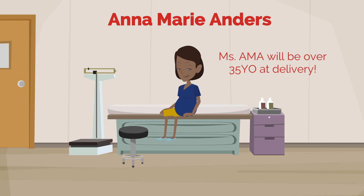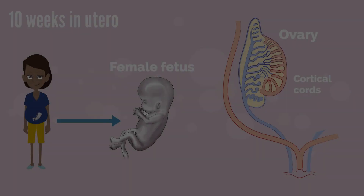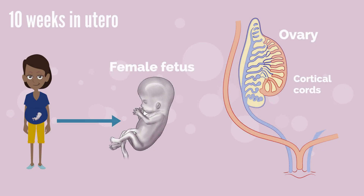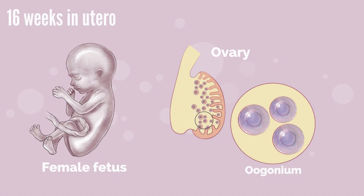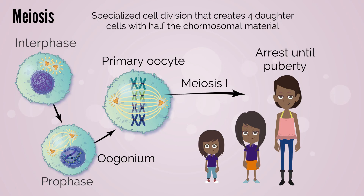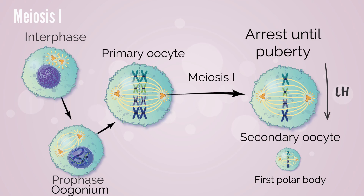Before we can talk about counseling her, let's get to the basics. By the time a female fetus is 10 weeks, there are identifiable ovaries with cortical cords. By 16 weeks in utero, each primordial follicle in the cortical cords has an oogonium, which will become a primary oocyte when it begins the first phase of meiosis. The primary oocyte arrests in prophase of meiosis I in utero and will stay that way until puberty. At puberty, one or more follicles is stimulated to complete meiosis I with a surge of LH during the menstrual cycle. With the release of the first polar body, the chromosome complement is now haploid.